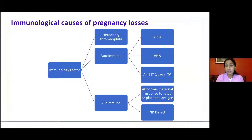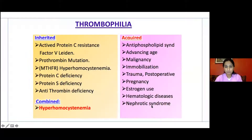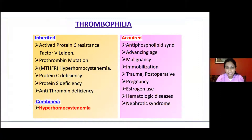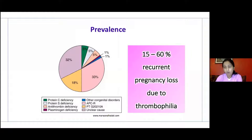Regarding the alloimmune response, it involves an abnormal maternal response to the fetus or placental antigen and the NK cell impact. Hereditary thrombophilias include activated protein C, factor V Leiden, prothrombin mutation, hyperhomocysteinemia, factor C, S, Z deficiency, and antithrombin deficiency. The acquired thrombophilia is antiphospholipid syndrome, which is the most common. The prevalence is 15 to 60% of recurrent pregnancy losses are due to thrombophilias.